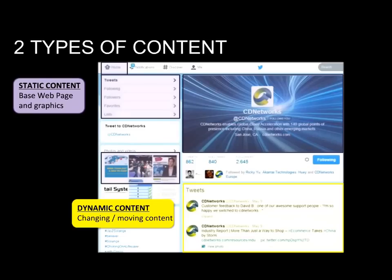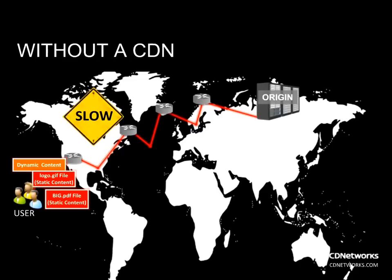As background, there are two types of content: static and dynamic. On the Twitter page, the Twitter logo and graphics are static — they rarely change, and we all see the same images. The Twitter feed is different for each of us; that's dynamic. It's always changing.